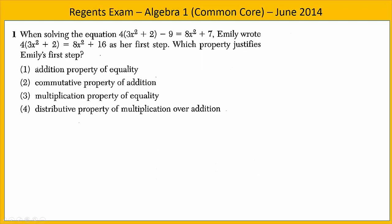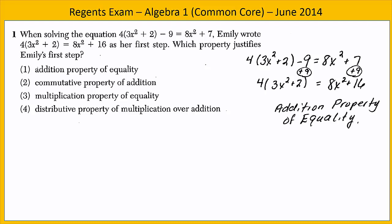In exercise one, we're told that Emily is solving an equation and we're given the beginning equation and her first step. We want to know which property justified the first step. Let's begin by organizing what we're given. We're given the original equation and the equation after her first step. Look carefully and notice the difference. It looks like she added nine to both sides. This is the addition property of equality, and so our answer is choice one.